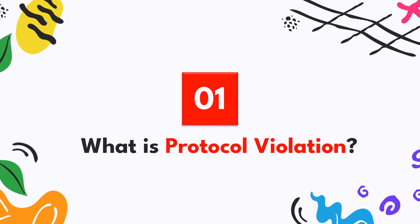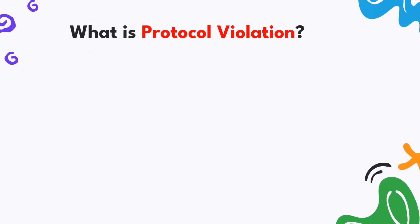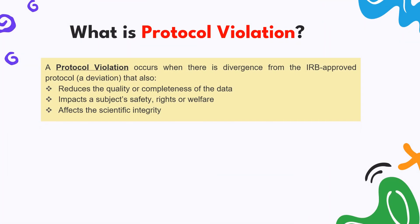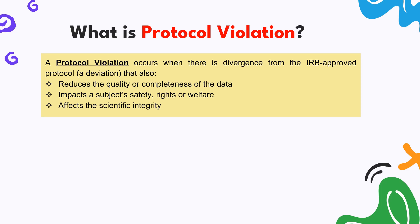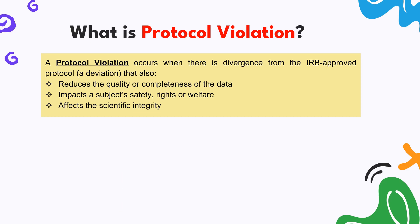Protocol violation can be defined as an activity which occurs when there is a divergence from the IRB-approved protocol, and that divergence has an impact on the reduction in quality or completeness of the data, on subject rights and safety, and on scientific integrity.